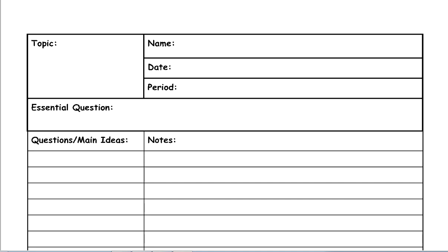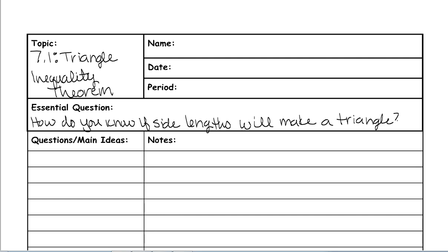Today we're going to go over the Triangle Inequality Theorem. Your essential question is: how do you know if side lengths will make a triangle? The first thing we want to look at is different sets of side lengths, because not all side lengths will make a triangle.